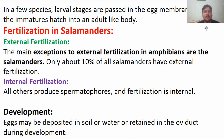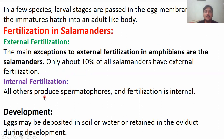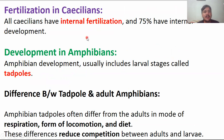In salamanders, reproduction differs. Approximately 10% of salamander species undergo external fertilization, while 90% undergo internal fertilization. In internal fertilization, the male deposits packets of sperm called spermatophores, which are picked up by the female's reproductive tract. Eggs are then deposited in water for development.